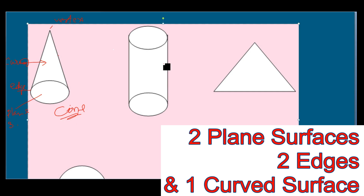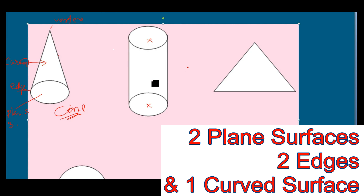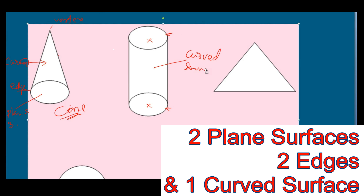This one is the cylinder. A cylinder has two plane surfaces — this one and this one are the two plane surfaces. It has two edges: this one and this other one. And this portion in between is the curved surface.